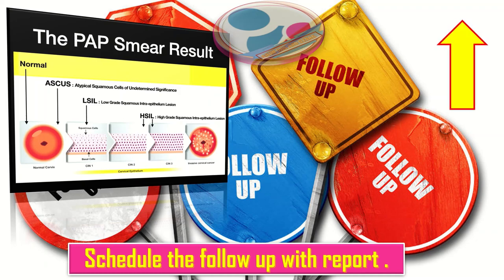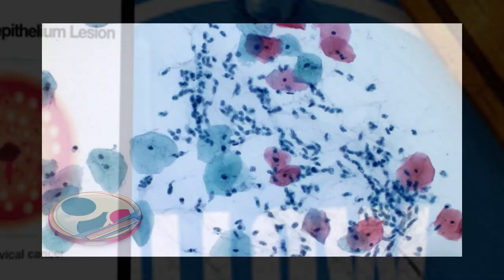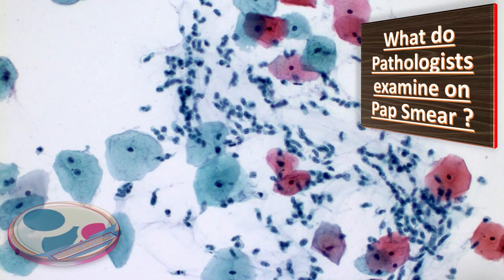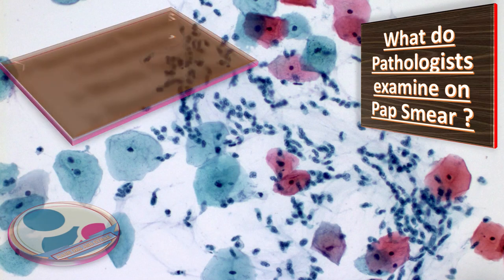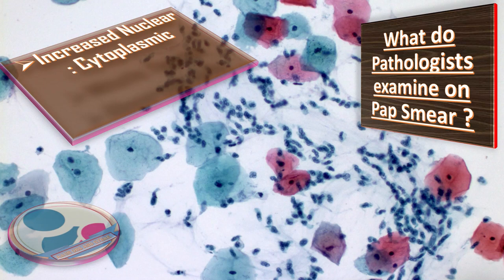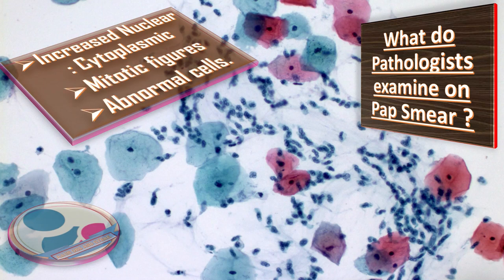The question arises: what do pathologists examine on the pap smear? After staining the slide, the pathologist examines the pap smear slide for increased nuclear cytoplasmic ratio, mitotic figures, and abnormal cells, and they report accordingly.